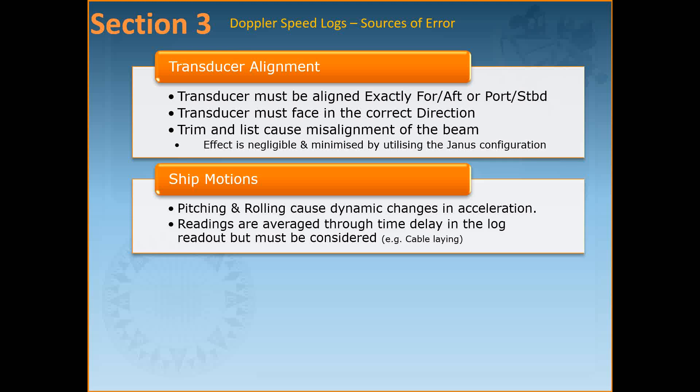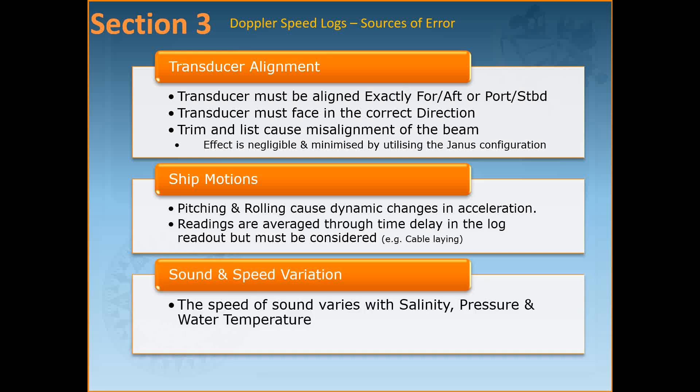Ship motions are the next source of error. Rolling, pitching, surging and heaving all contribute to instantaneous acceleration and therefore changes in speed which the log is measuring, which may differ from the true forward speed of the ship. For a fore-and-aft axis log, pitch is the most significant cause of error; for a cross-track log, errors caused by roll can be significant. The navigator must pay particular attention to instantaneous motions and read readings with caution even after averaging over time. The final source of error is sound speed variation — the speed of sound varies with water temperature, salinity and pressure, with temperature being most significant. Some Doppler logs may be compensated for errors caused by sea temperature change.